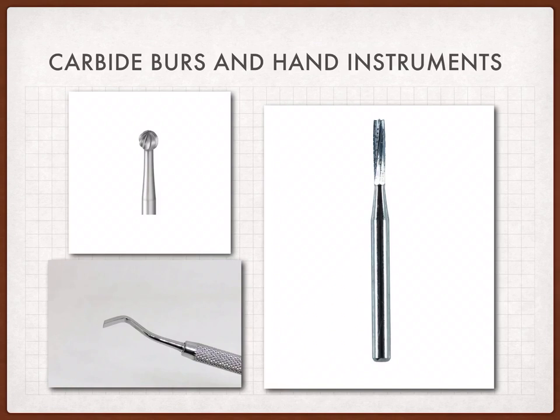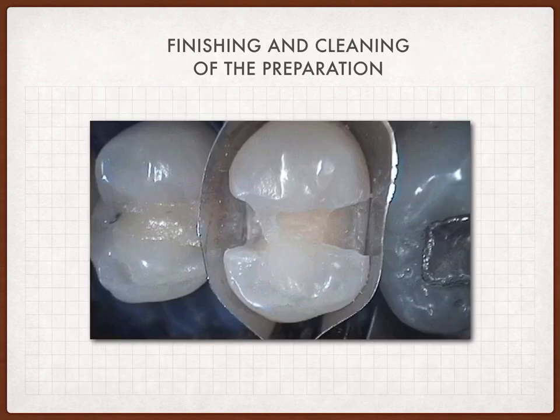After completing enamel preparation with the high-speed handpiece, we prepare the dentin using low-speed handpieces with carbide burs and hand instruments. This includes the round carbide bur, the fissure carbide bur, and the enamel hatchet hand instrument for final preparation and finishing. The finished preparation should have adequate outline form, retention form by beveling, resistance form with enough thickness, prevention of stress concentration areas, convenience form, and a final clean finish.